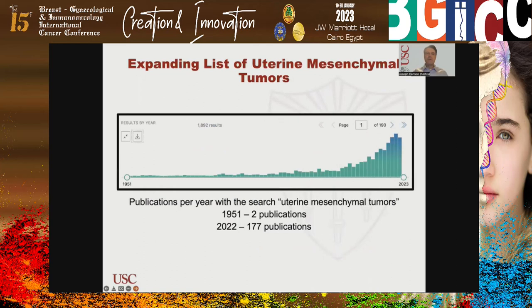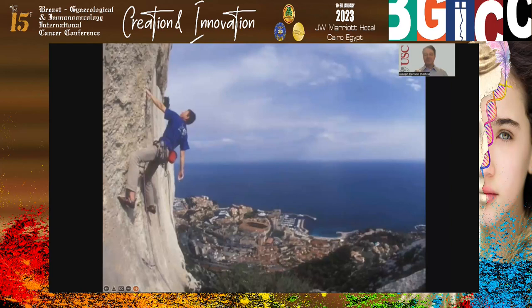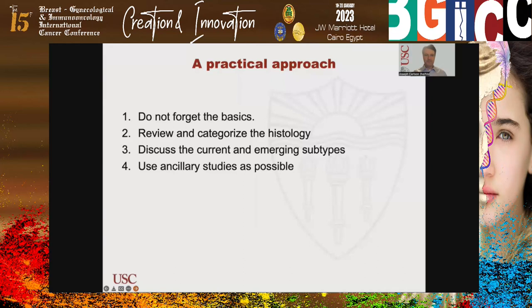There is an ever-expanding list of mesenchymal tumors in the uterus. Over the past 70 years, publications using the search term 'uterine mesenchymal tumors' have increased rapidly — back in 1951 there were two publications that year, and in 2022 there were 177. We need to plan our approach just like a mountain climber, carefully thinking about each step.